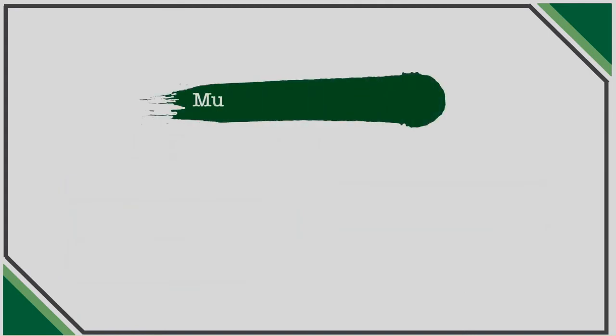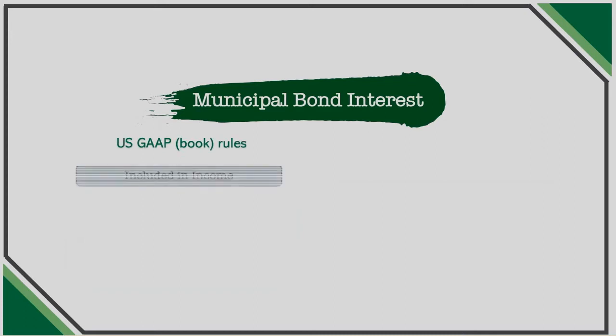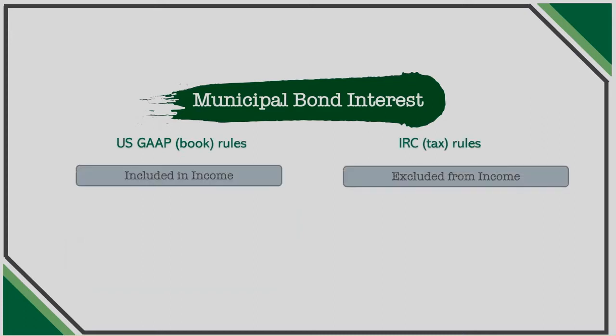When a company invests in municipal bonds, they receive interest income. This income is recorded for book purposes as a debit to cash and a credit to interest revenue. However, the tax code provides that this income may be earned tax-free since it is an investment in a government asset. We will use municipal bonds to walk through how a permanent difference is journalized and how it impacts a company's effective tax rate in more detail.